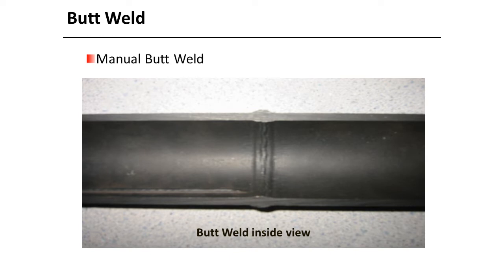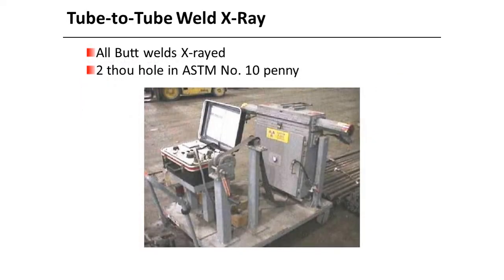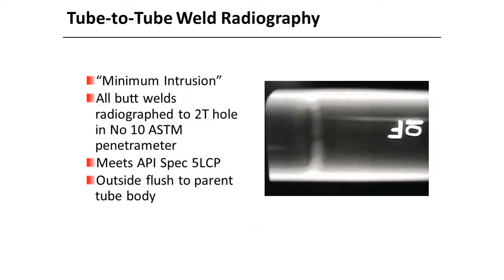This photo shows the weld bead on the outside of the pipe, then on the inside of the pipe. We can achieve better results on field welds with orbital equipment. All coiled tubing welds require quality assurance procedures and x-ray to confirm the weld is good. A photo shows an x-ray device for inspecting tube-to-tube butt welds, capable of seeing a 0.002 inch hole. Another photo shows an example of a butt weld radiograph.